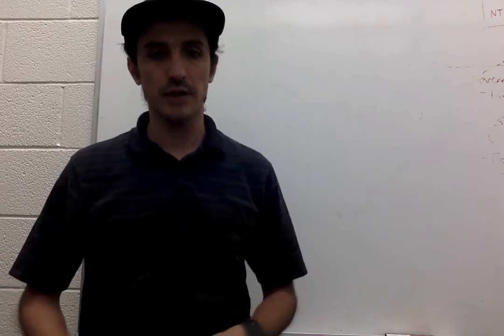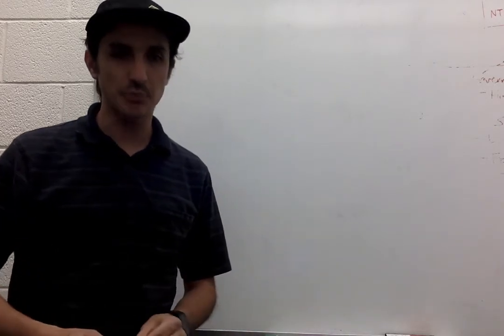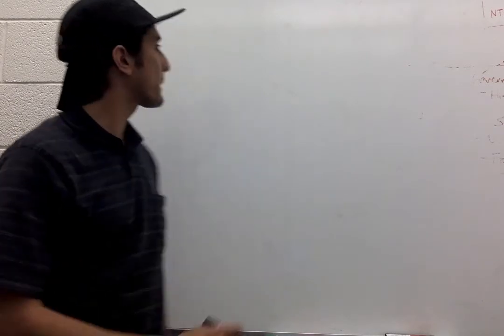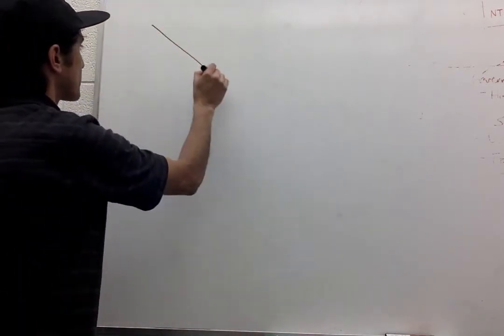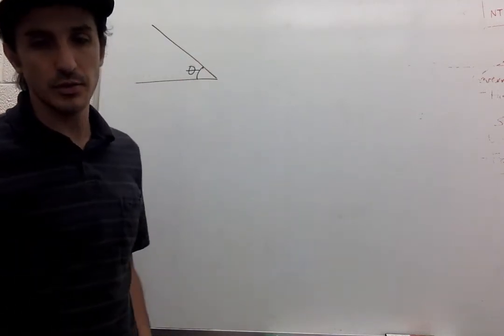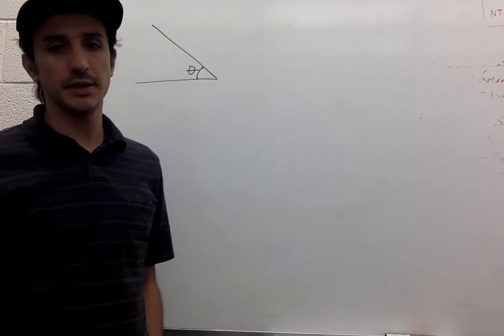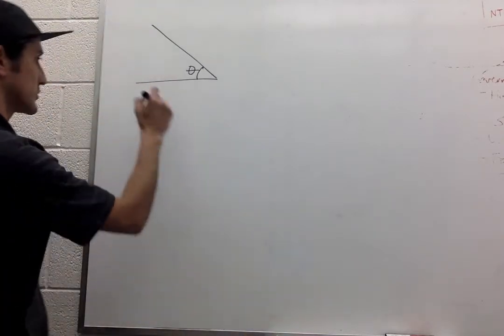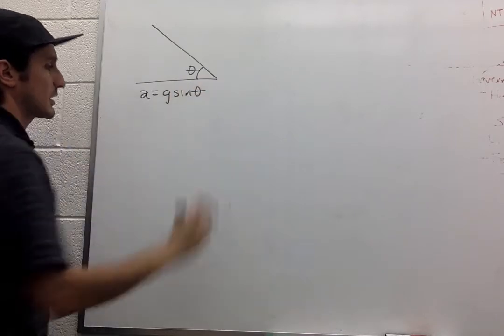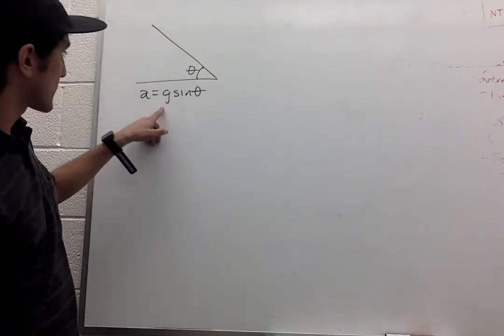It says that there's an object that slides frictionlessly down a plane inclined by an angle of theta, and that the acceleration equals, as you would expect, g sin theta. So the vertical component.